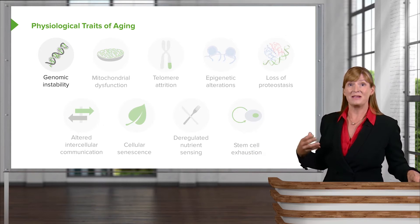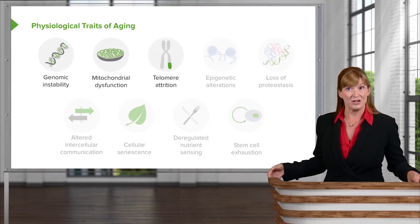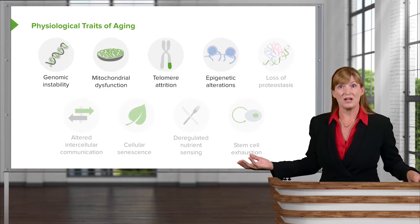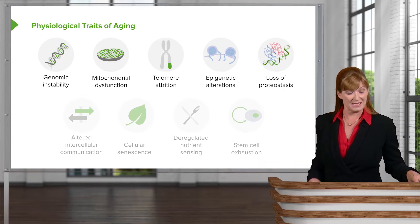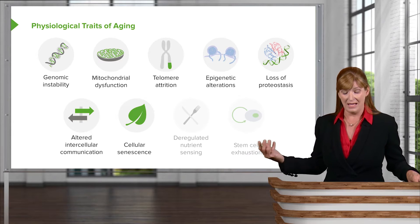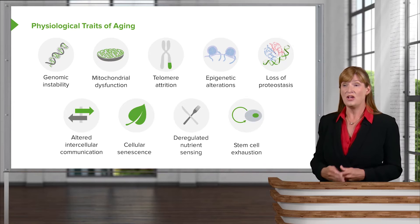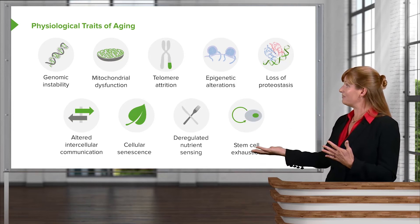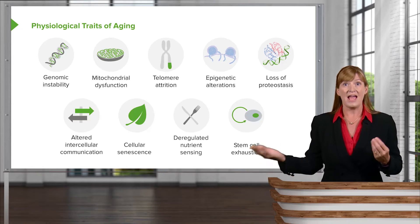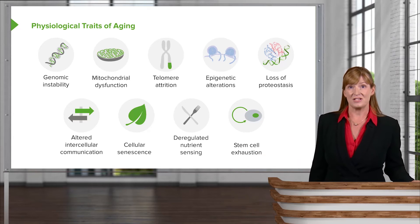In addition to genomic instability, we have mitochondrial dysfunction and telomere attrition — all of these should be pretty familiar topics. We also have epigenetic alterations, loss of proteostasis, altered intercellular communications, cellular senescence, as well as deregulated nutrient sensing and stem cell exhaustion. These are nine categories of things that do change as cells age and lend themselves to some of the phenotypic manifestations of aging.